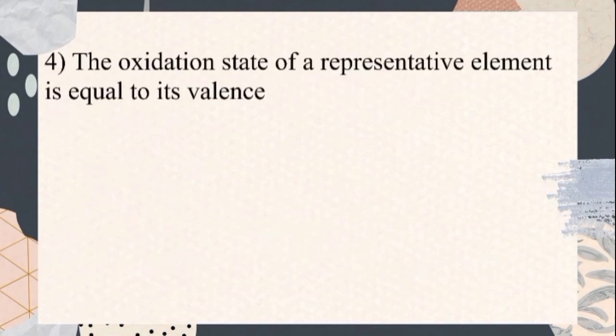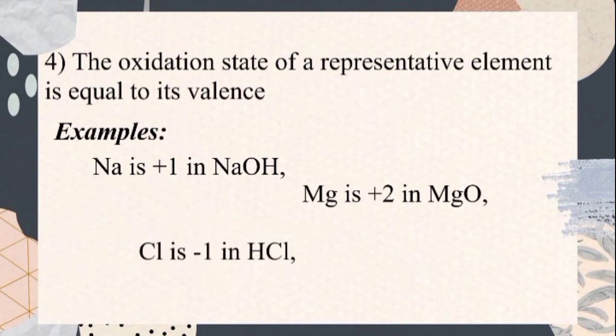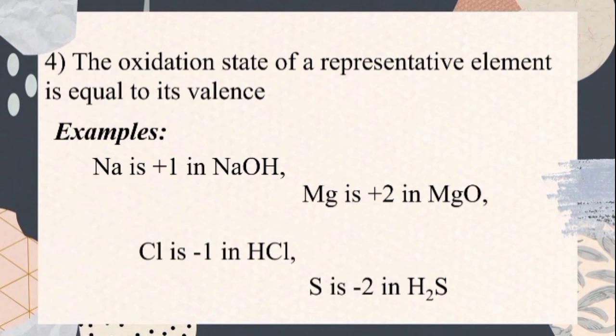Rule number four: the oxidation state of a representative element is equal to its valence. For example, sodium is positive one in sodium hydroxide, magnesium is positive two in magnesium oxide, chlorine is negative one in hydrogen chloride, and sulfur is negative two in hydrogen sulfide.